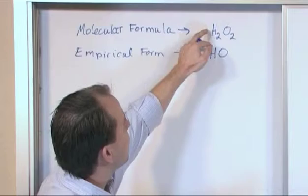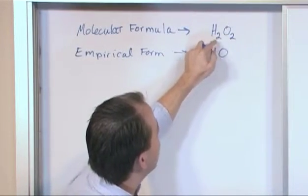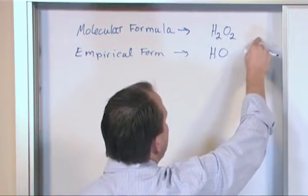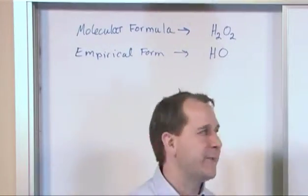This guy is really how they're bound. The empirical formula is just when you take these subscripts and if you can divide them by some number, where you can divide everything in the compound by the same number and get something reduced, that's empirical. It's like simplifying a fraction.